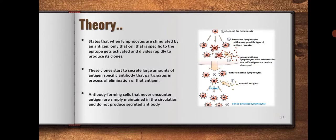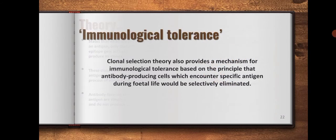Antibody-forming cells that never encounter antigen are simply maintained in the circulation and do not produce secreted antibody. Clonal selection theory also provides a mechanism for immunological tolerance based on the principle that antibody-producing cells which encounter specific antigen during fetal life would be selectively eliminated.